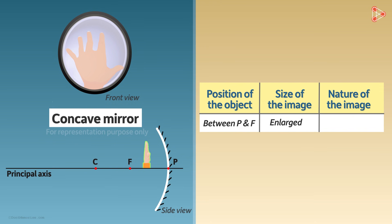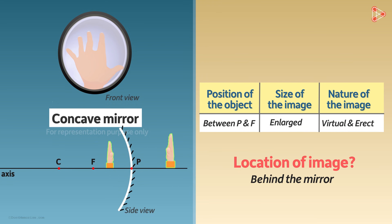Also, is the image upright or erect? What about the nature of the image? Is it real or virtual? Yes, it's a virtual image. It appears to be formed behind the mirror. Where is the location of the image? It is a virtual image, so it does not have any location. It only appears to be formed in a location behind the mirror. But we will find that location in our next video using ray diagrams.